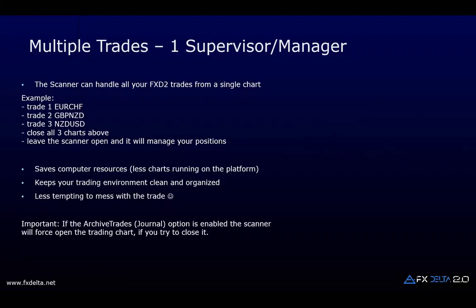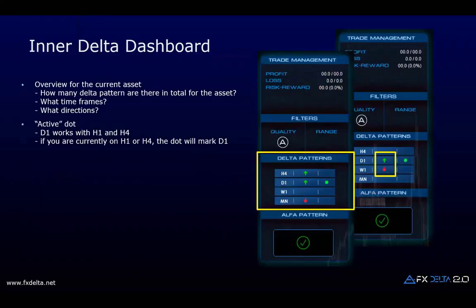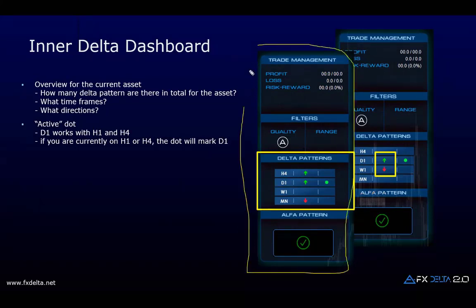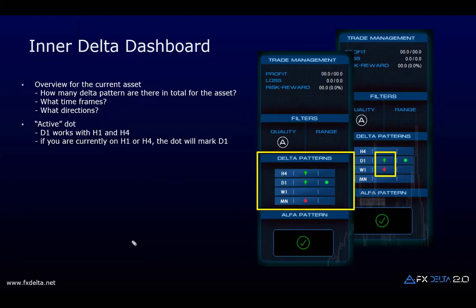That covers the core functionalities. Now for the visual things. Inside the trade manager we've introduced a delta patterns tab. As people started using the software more and sharing opinions, we realized we needed this on the chart. The scanner gives you the overall picture of all instruments you're interested in, but once you came to the trading dashboard it was like you were kind of lost — what's happening on higher timeframes, lower timeframes, what's the overall delta view?